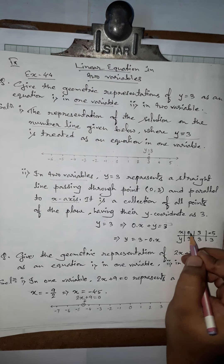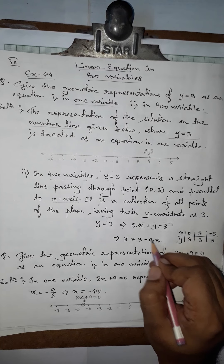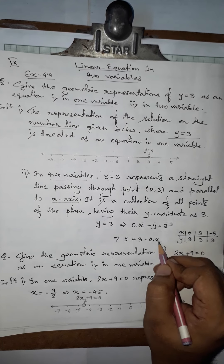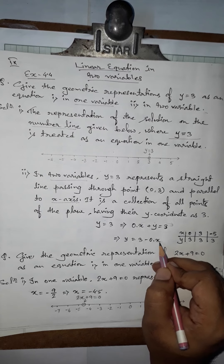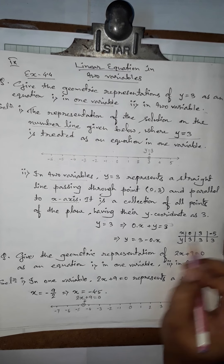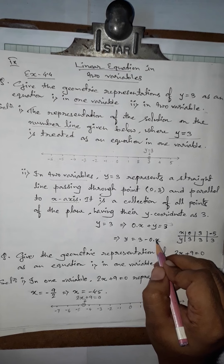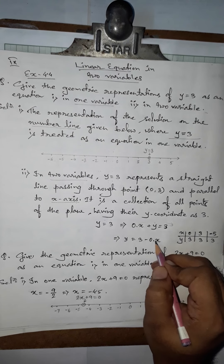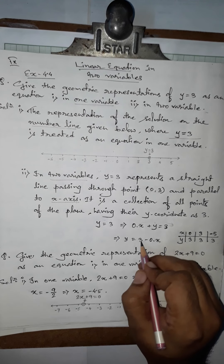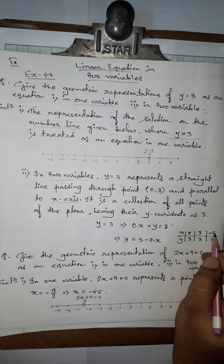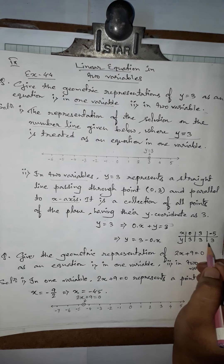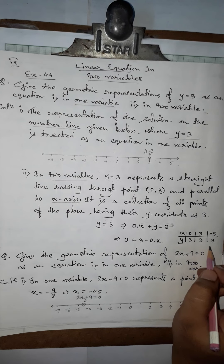When we put x = 0: 0 times 0 gives 0, so y equals 3. When we put x = 3: 0 times 3 gives 0, so y equals 3 again. When we put x = −5: 0 times −5 gives 0, so y equals 3. For every value of x, whatever the value of x, we will always get y equals 3.